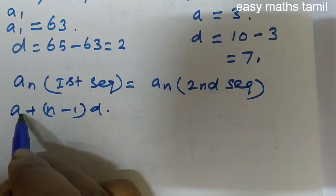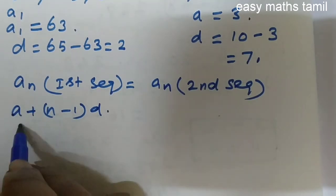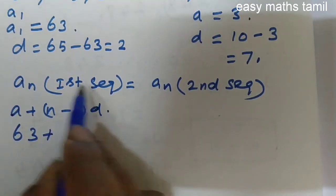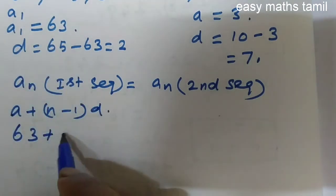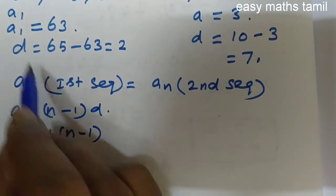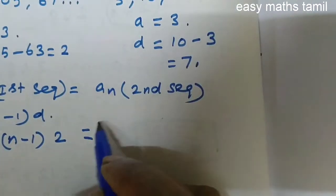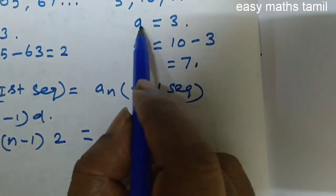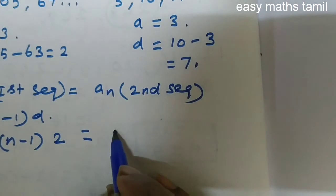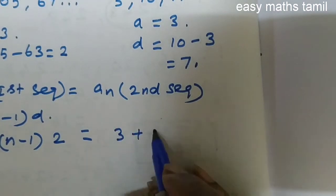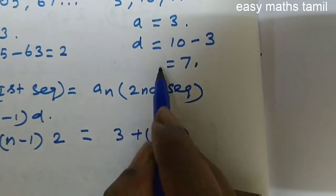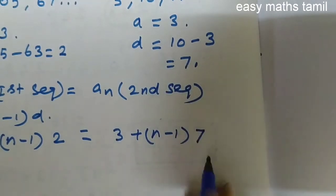So, a plus the value of a is 63 for the first sequence. It is 63 plus n minus 1 into d which is 2. It is equal to a plus n minus 1 into d. The value of a is 3 plus n minus 1 into the value of d which is 7 for the second sequence.